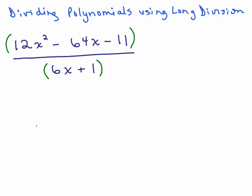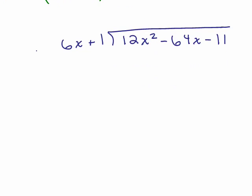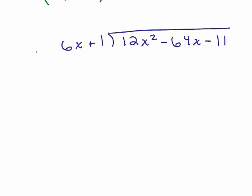In order to do this, we're going to have to use long division. The denominator is what goes out in front, so this is like 6x plus 1, and we're dividing that into 12x squared minus 64x minus 11. To be quite honest, it's actually easier to do long division in algebra than with numbers. This actually is going to be a little bit easier.